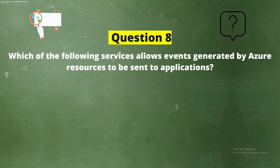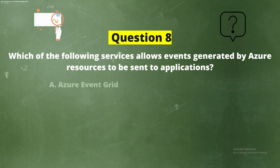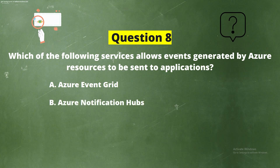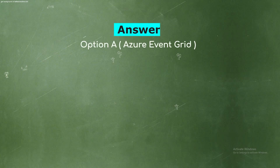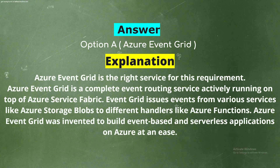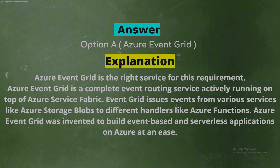Question 8: Which of the following services allows events generated by Azure resources to be sent to applications? Options: Option A - Azure Event Grid, Option B - Azure Notification Hubs, Option C - Azure Event Hubs, Option D - Azure Logic Apps. The correct answer is Option A - Azure Event Grid. Explanation: Azure Event Grid is a complete event routing service running on top of Azure Service Fabric, issuing events from services like Azure Storage Blobs to handlers like Azure Functions, designed for event-based and serverless applications.